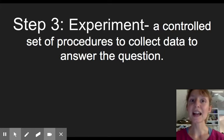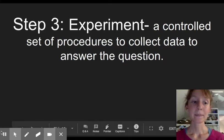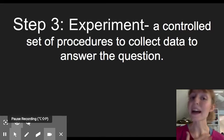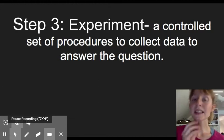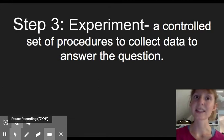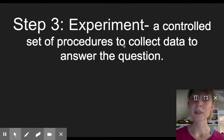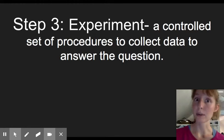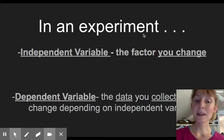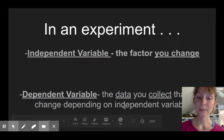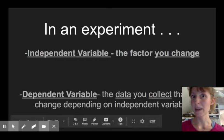The third step is actually design an experiment. Just because I have experience of plants growing better in light doesn't necessarily mean that all plants grow well in good light. So it might depend on the plant that I'm using and too much light might be bad. So an experiment is really important to see whether your hypothesis is right. It's a controlled set of procedures to collect data to answer the question. So in an experiment, you have an independent variable, the factor that you change, and a dependent variable, the data you collect that might change depending on the independent variable.